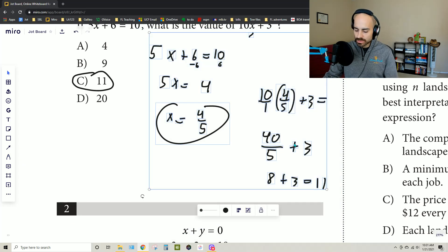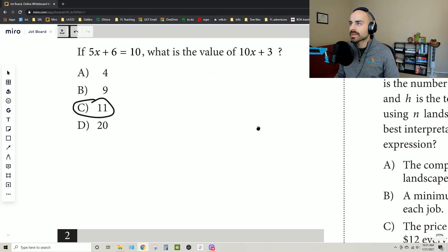Alternatively, whenever we see that they're not asking exactly what x is, but they're asking for a different version of what they originally gave you, you can ask yourself, what can I do to make this look like that, and how will that change my answer?